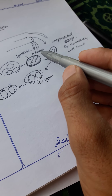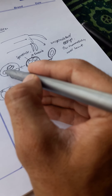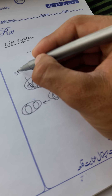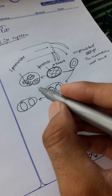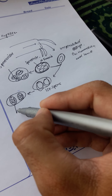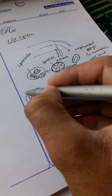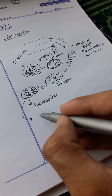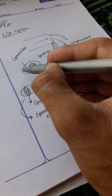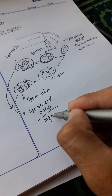In Eimeria, each sporocyst divides once and produces two banana-shaped sporozoites. While in Isospora, this divides twice producing four sporozoites. The result is a sporulated oocyst, which is the infective stage.